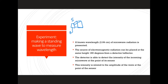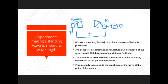We also need something to receive the microwaves. We'll call this the receiver. And on this receiver, we'll have a detector that will tell us the magnitude of the microwave that's incoming. These will be 180 degrees away from each other and at a measurable distance. The detector is able to detect the amplitude of the wavelength at the point of the detector.